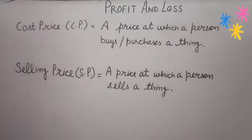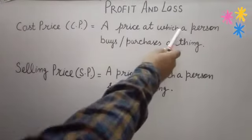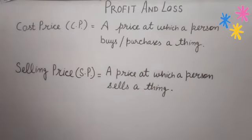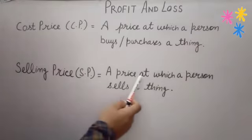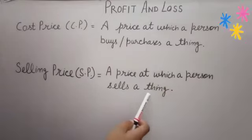What is a Cost Price? A price at which a person buys or purchases a thing. And what about Selling Price? A price at which a person sells a thing.